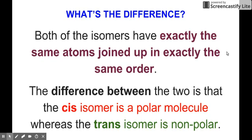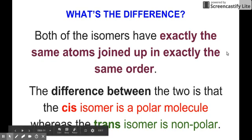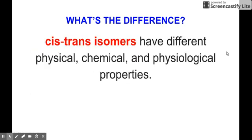Both of these isomers have exactly the same atoms joined up in exactly the same order. The difference between the two is that the cis isomer is actually a polar molecule, whereas the trans isomer is non-polar. Take note, your cis is polar while your trans isomer is non-polar.